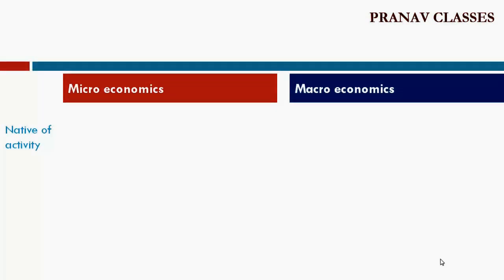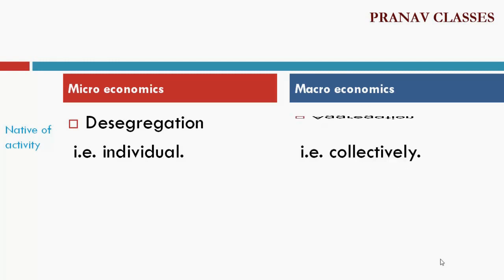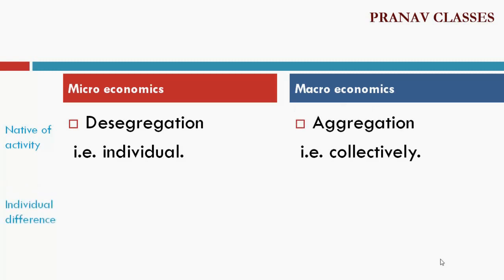Regarding the nature of activity: microeconomics involves disaggregation — only individuals are studied, and totals are not considered. Macroeconomics, on the other hand, involves aggregation — it takes a collective approach.